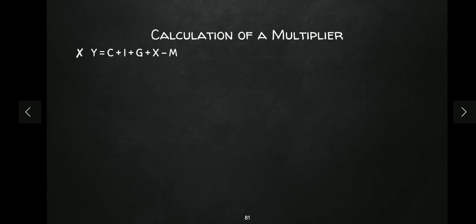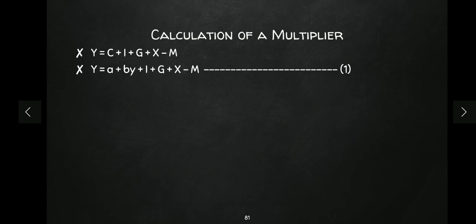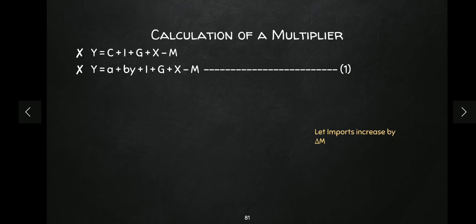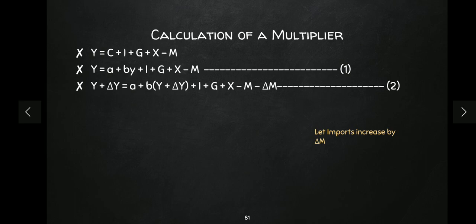In the four-sector economy, equilibrium is Y = C + I + G + X − M, because imports are leakages — when imports increase, income flows out of the country and our national income reduces. We write C as a + bY, making this equation one. Now let's say imports increase by delta M, so new imports are M + delta M, and national income changes to Y + delta Y. When we subtract equation one from equation two, all non-delta terms cancel out.